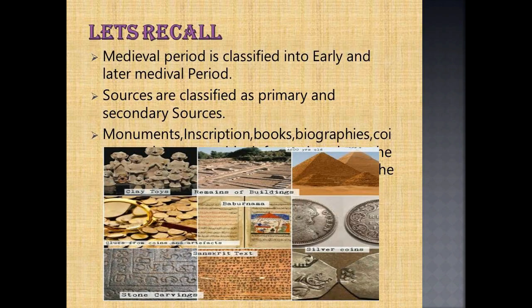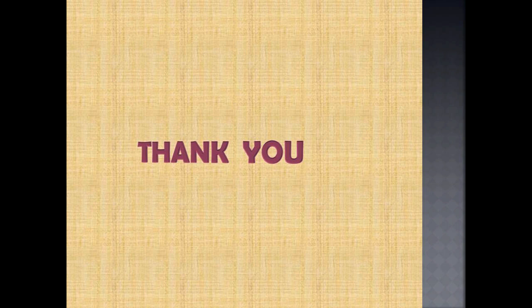Let's recall what we have learned so far. The period from AD 700 to 1200 is classified as the early medieval and later medieval period. Sources are classified as primary and secondary sources. Inscriptions, monuments, devotional literature, books, biographies and autobiographies provide information about the political, social and economic conditions of medieval times. We have also seen the foreign travellers who visited India during the period and contributed their accounts. I believe you have gained knowledge about the sources of medieval India. Thank you.